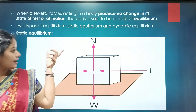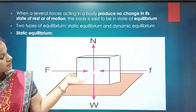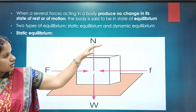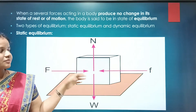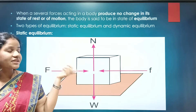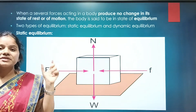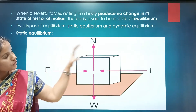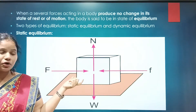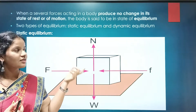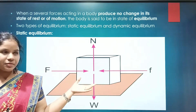Static equilibrium — consider a box balancing on a table. Four forces are acting on that object, but it is not changing its state of rest. Static means state of rest. When several forces act on an object and it does not change its state of rest, such a body is said to be in static equilibrium.